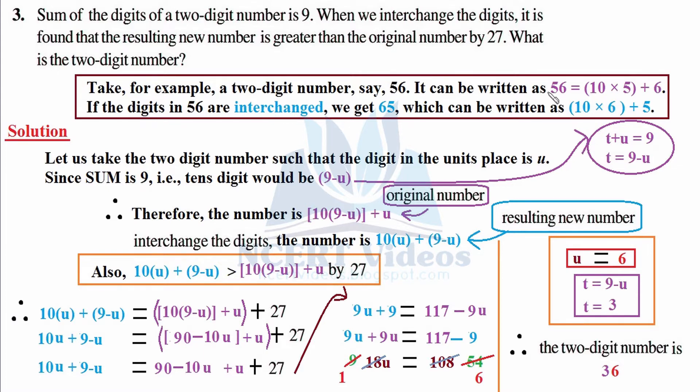It can be written as 56 equals (10×5) + 6. This is the descriptive form of writing 56. In order to get units place, we just write the given number 6 as it is, and in order to get tens place we multiply it with 10.